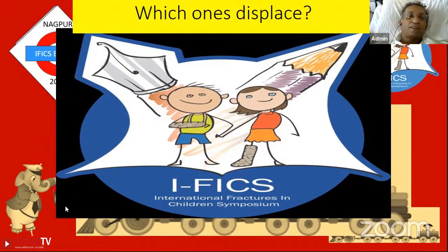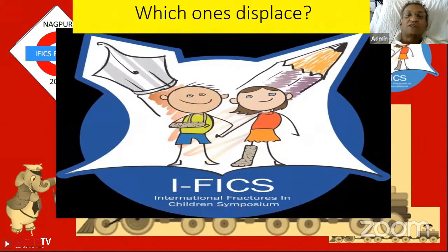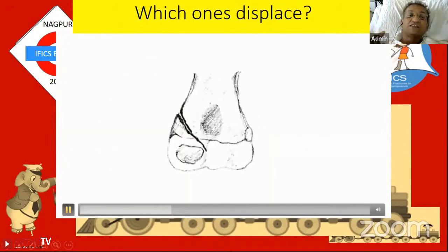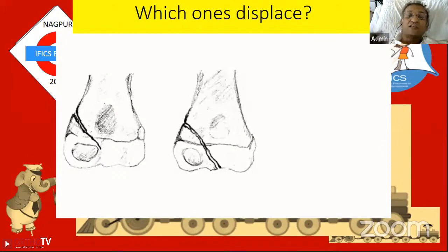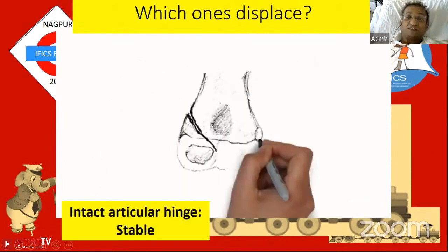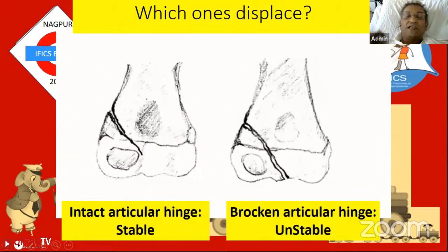On the internal rotation view, if the lateral gap is more than the medial gap, or if the fracture lines are divergent, those fractures will displace. On lateral view, if there is displacement, they will displace. Fractures that will displace are those where the fracture line extends to the articular surface; those that won't displace have not extended to the articular surface. X-rays don't always show this, but there is no need for ultrasound or MRI in every case if you take proper X-rays, analyze the fracture anatomy, and do a follow-up X-ray at one week.